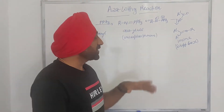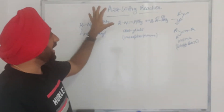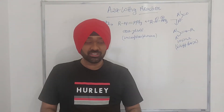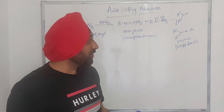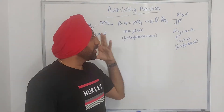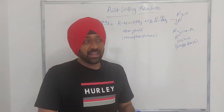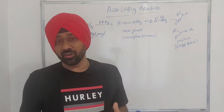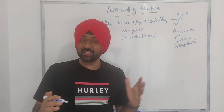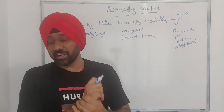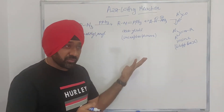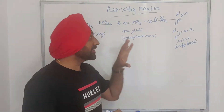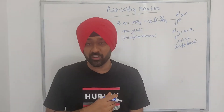Welcome everybody to a new video. In this video we are going to be talking about a very important reaction called the Aza-Wittig reaction. This is going to be a short video where we discuss what this reaction is all about, and the important examples of intramolecular reactions where you make 5, 6, 7, or 8-membered heterocyclic rings. There have been one or two questions asked in various competitive exams based on this concept.